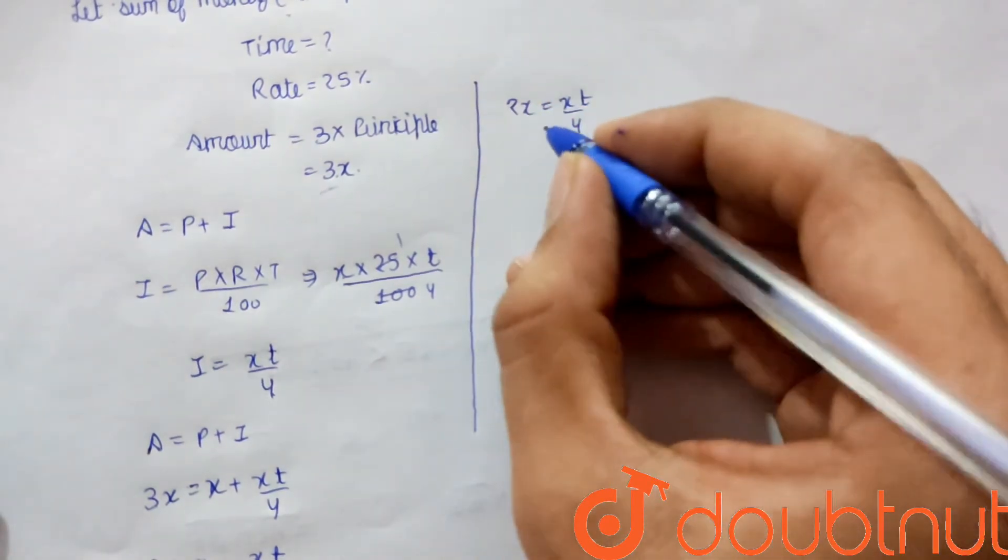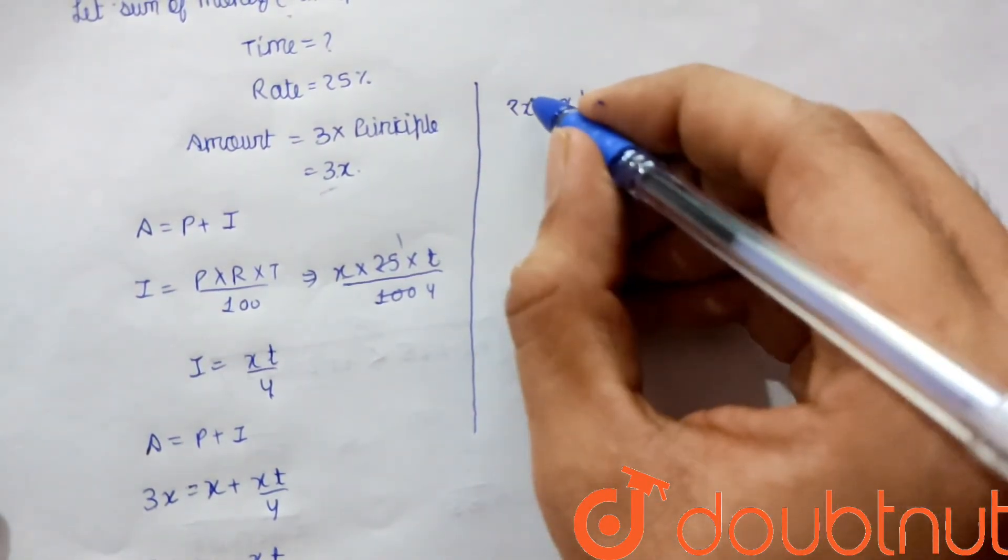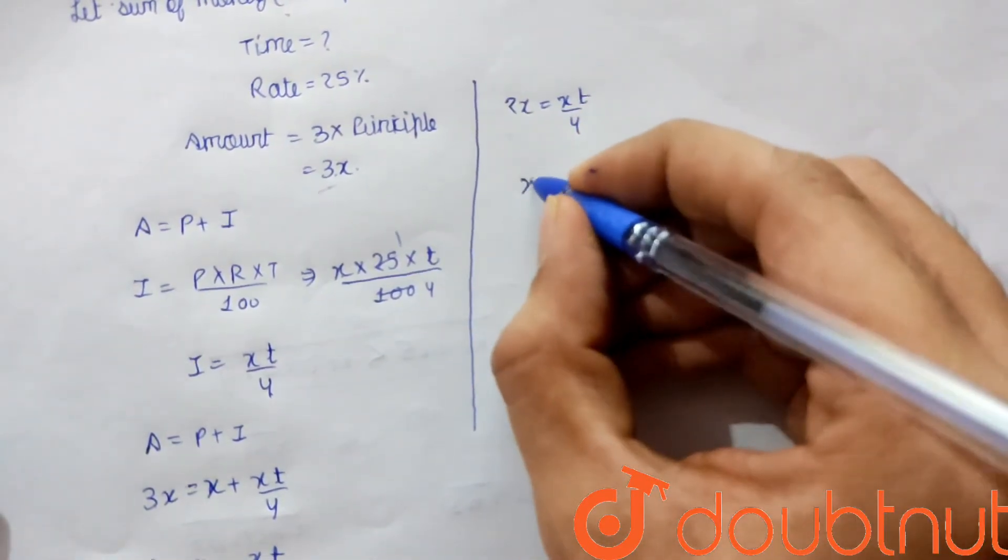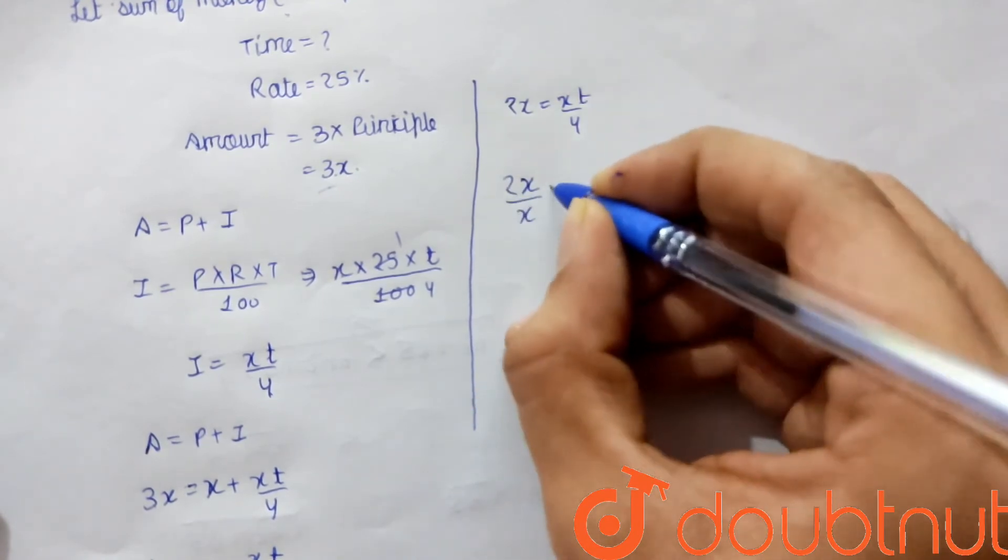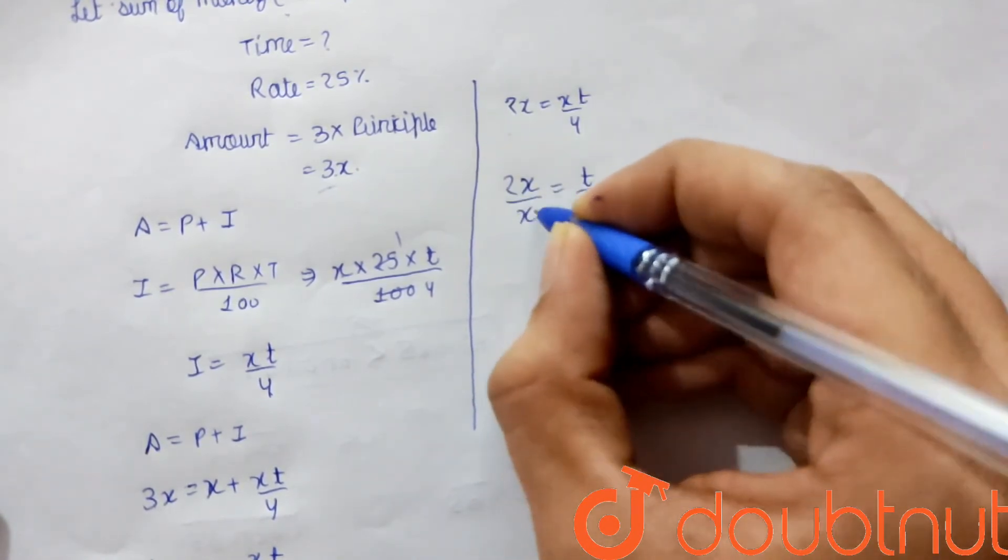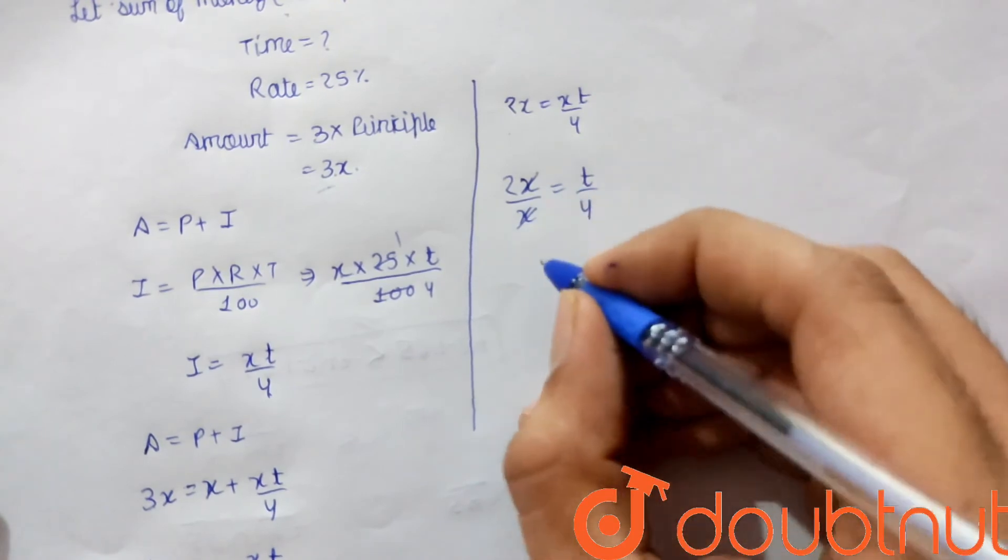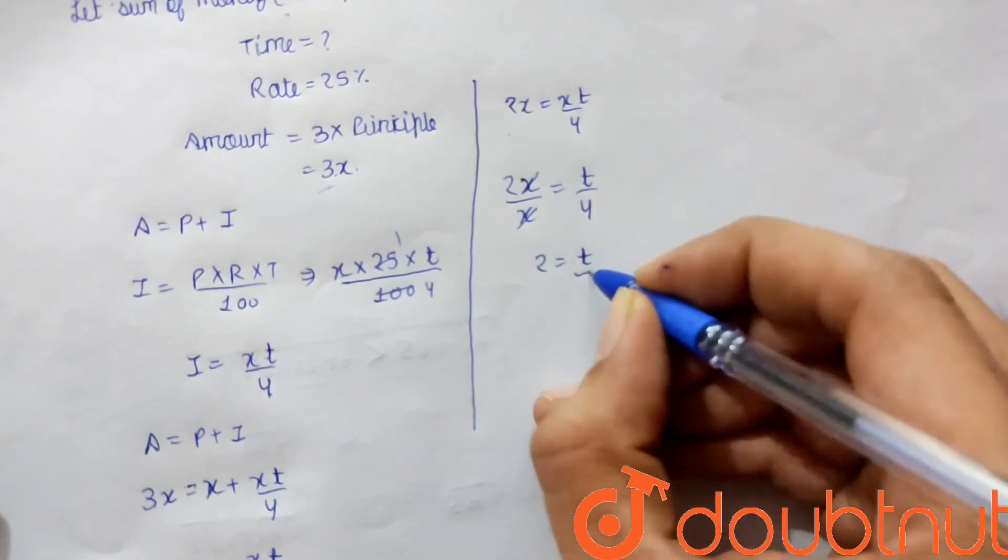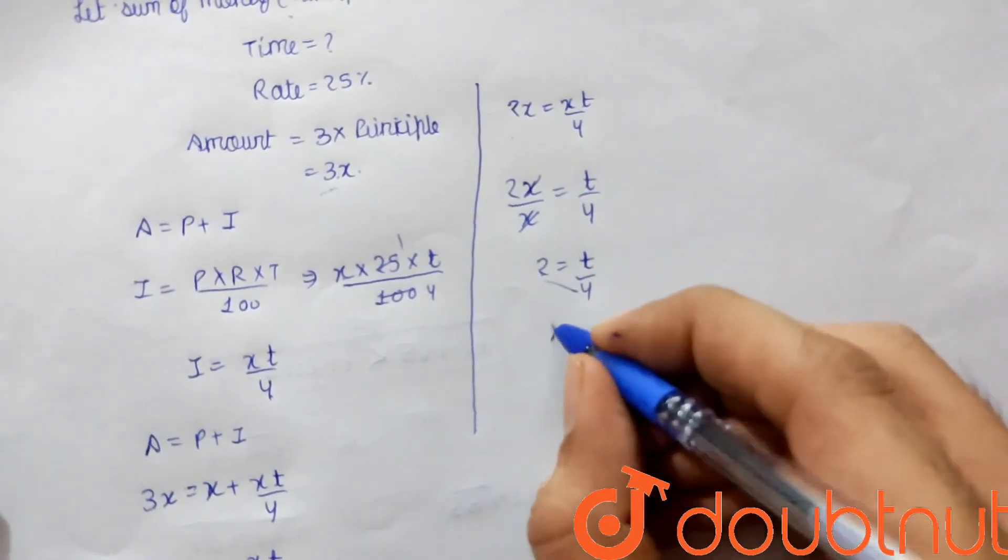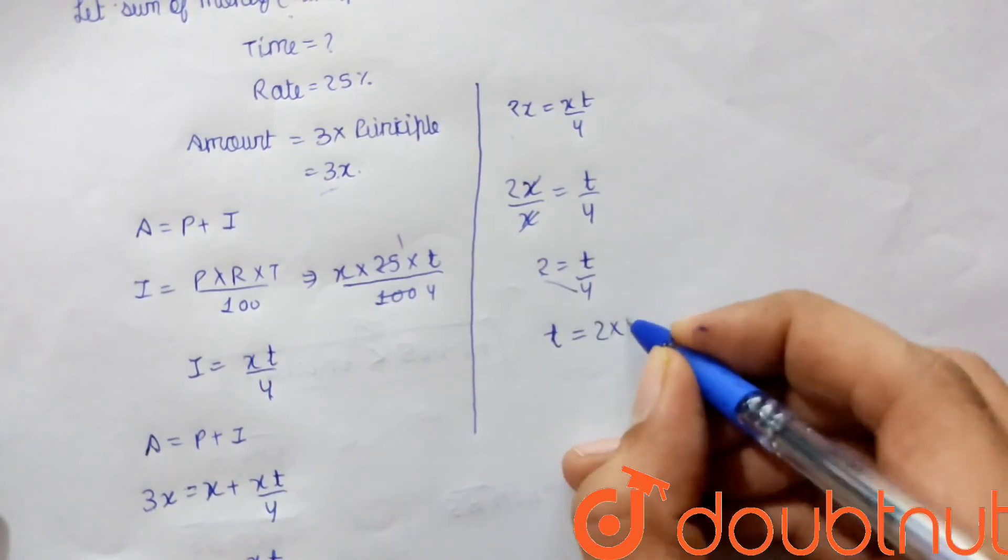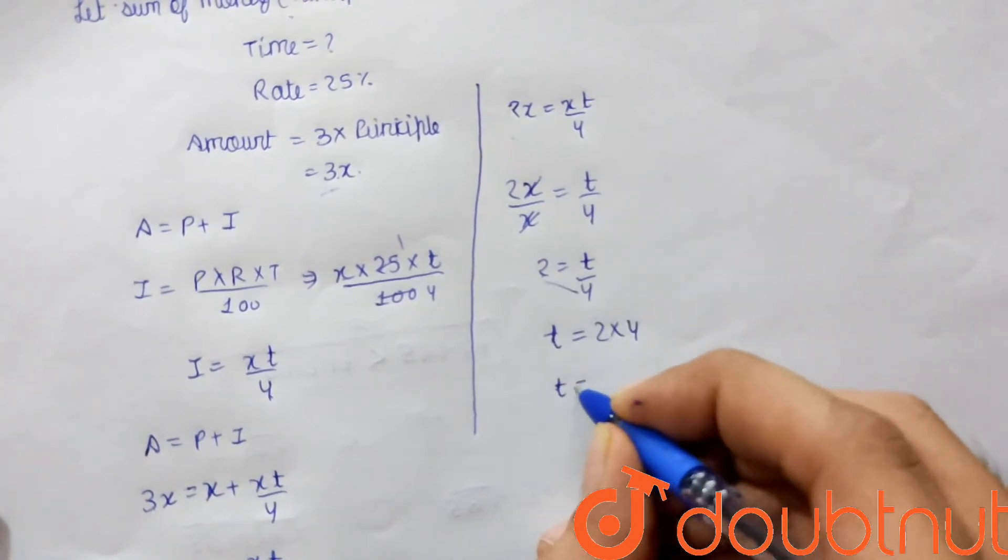Dividing both sides by X, we get 2 = T/4. Multiplying both sides by 4, T = 2 × 4 = 8.